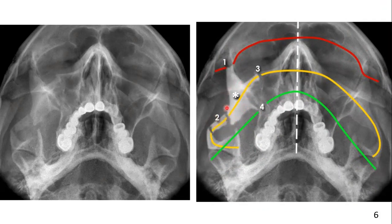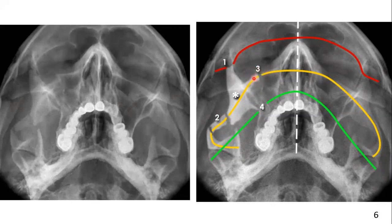Here, the zygoma is separated from the zygomatic arch. Then, passing over the zygomatic body and into the orbital floor or infraorbital rim, you can see a separation or fracture in the orbital floor. Now come to the third line, which passes at the condyle and coronoid and the lateral wall of the maxillary antrum.